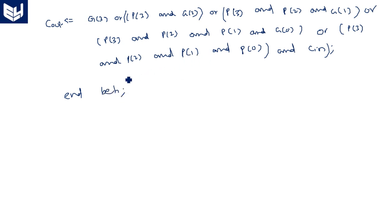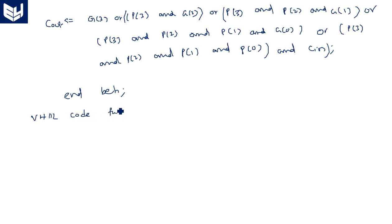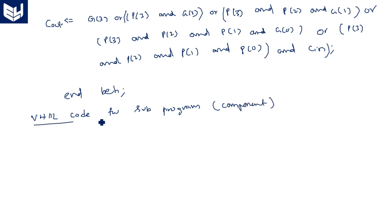Now, along with this main program, we have to instantiate the component. Component instantiation has been done for the partial full adder, but we also need to write a separate sub-program for it — the VHDL code for the component, which is the partial full adder module.